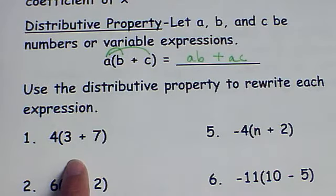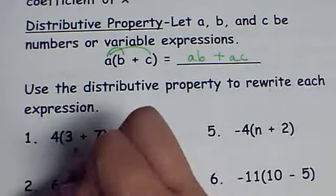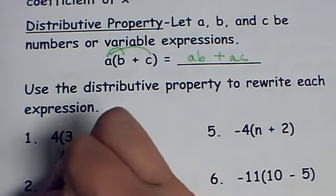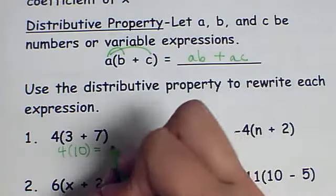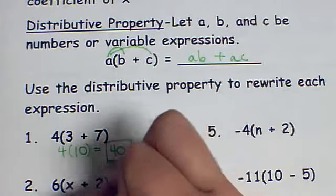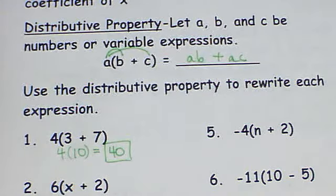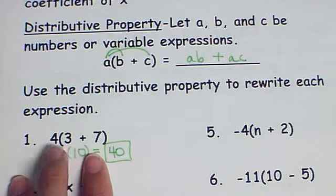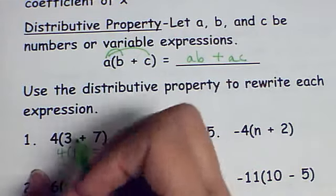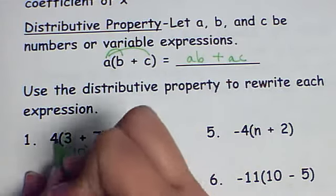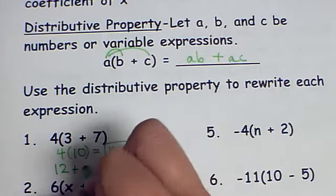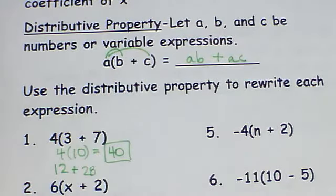In this problem we can still do our PEMDAS because 3 + 7 is of course 10. I'm multiplying that by 4 and 4 times 10 is 40. Now, if these two were not alike I could not add them together. So you'll see I could have also done 4 times 3 which is 12, plus 4 times 7 which is 28, and 28 + 12 is 40.